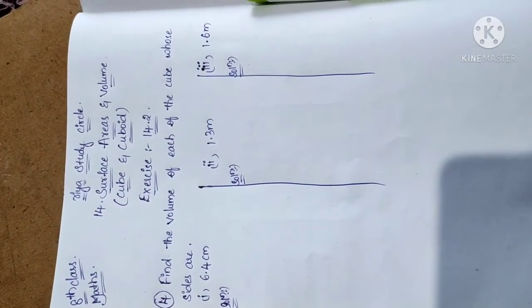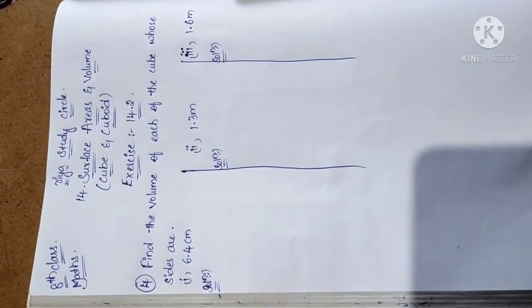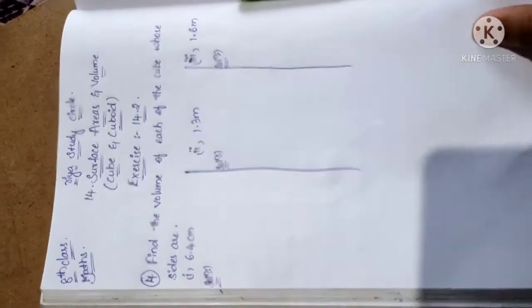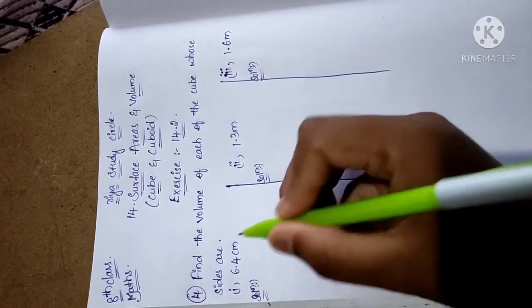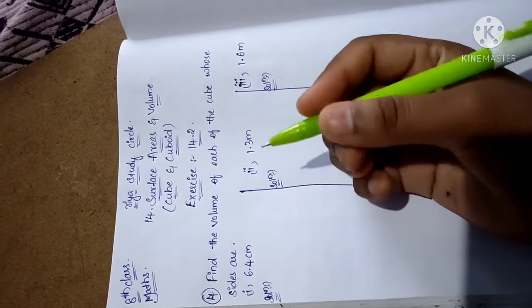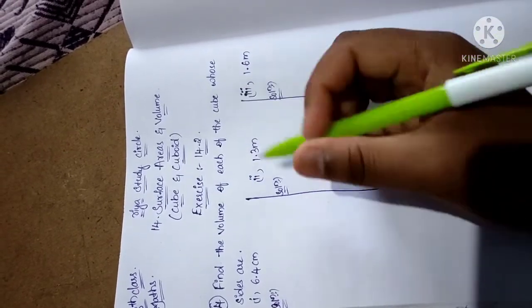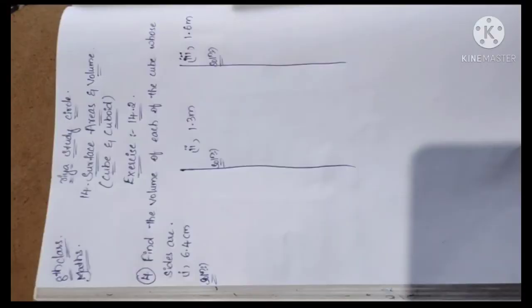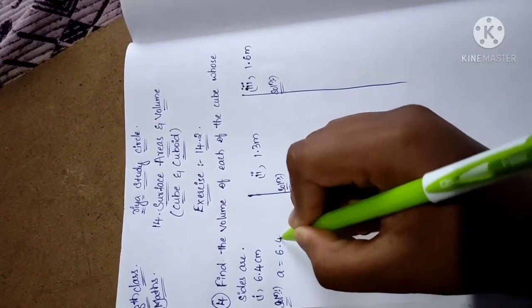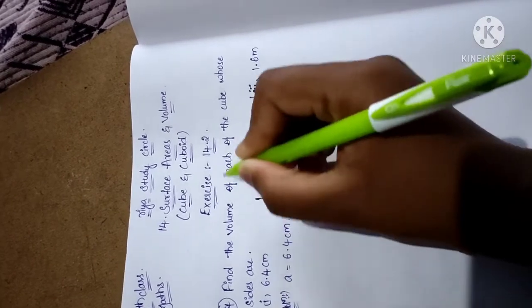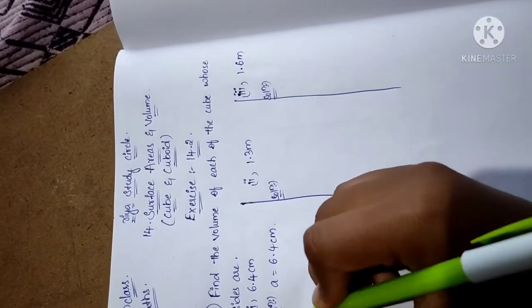It is a very simple problem, so let's see the solution. First problem: 6.4 centimeters is the side of a cube. We all know that a cube has the same length, breadth, and height. The volume of a cube formula is